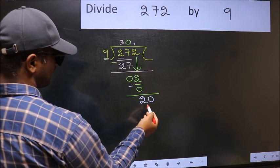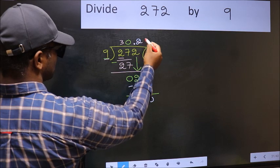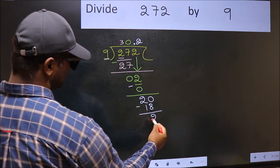So 20. A number close to 20 in the 9 table is 9 times 2, which is 18. Now you should subtract. We get 2.